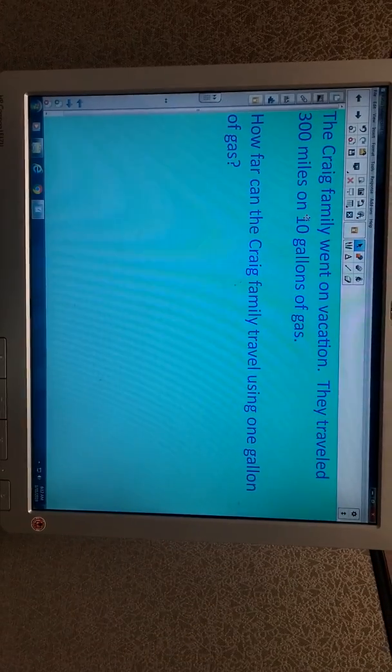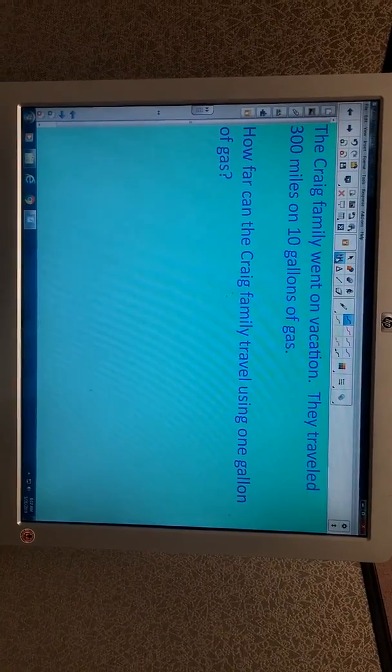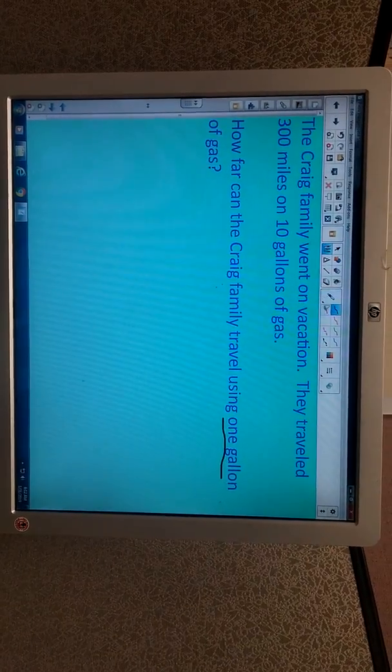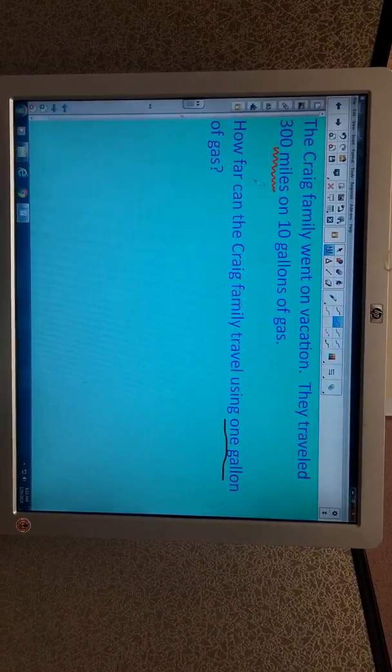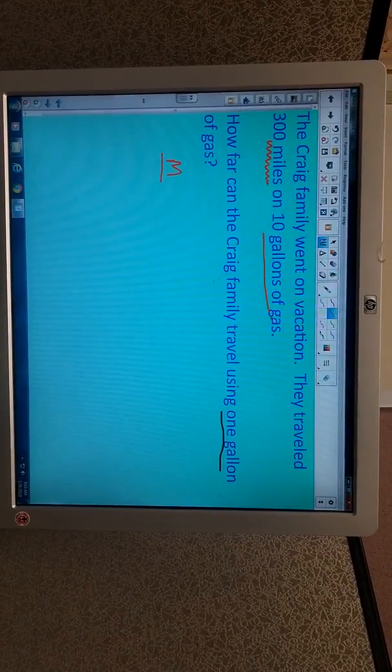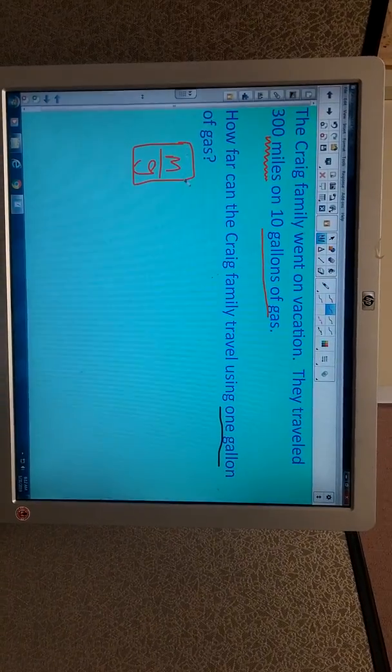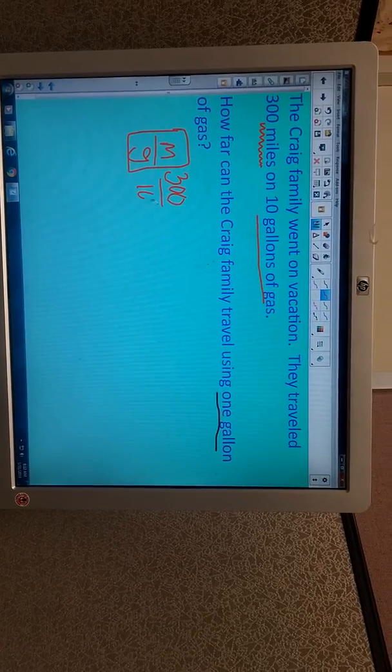Alright, here's an example. The Craig family went on vacation. They traveled 300 miles on 10 gallons of gas. How far can the Craig family travel using one gallon of gas? The first thing I notice here is that this is a ratio because it's comparing two quantities. It's comparing the number of miles a car can go for how many gallons of gasoline. And we know from the original problem that it can go 300 miles on just 10 gallons of gas.